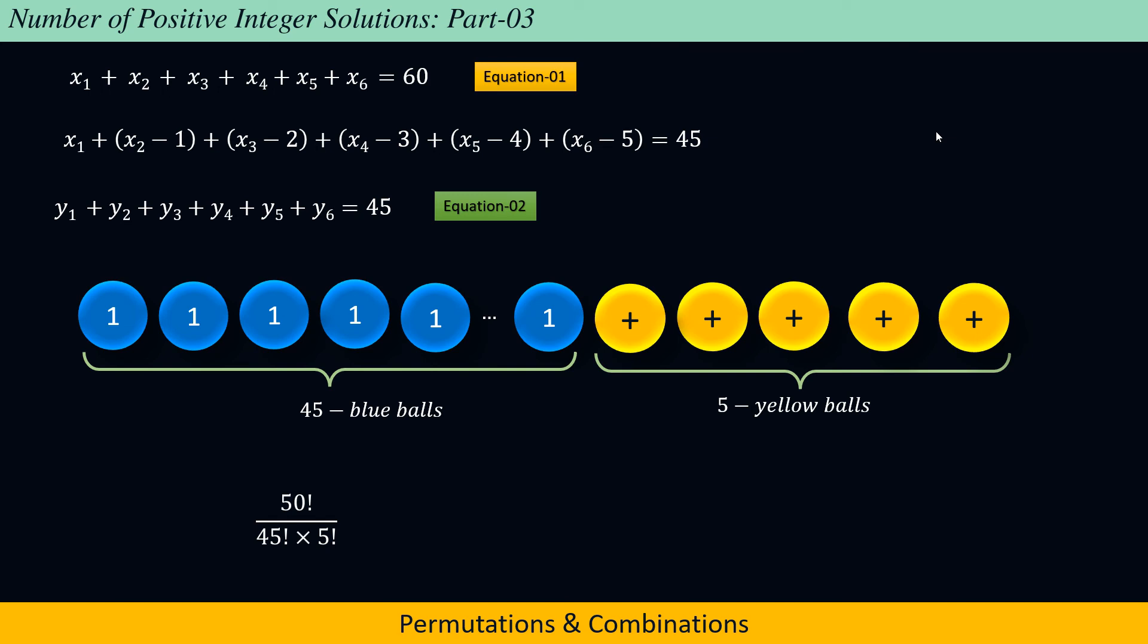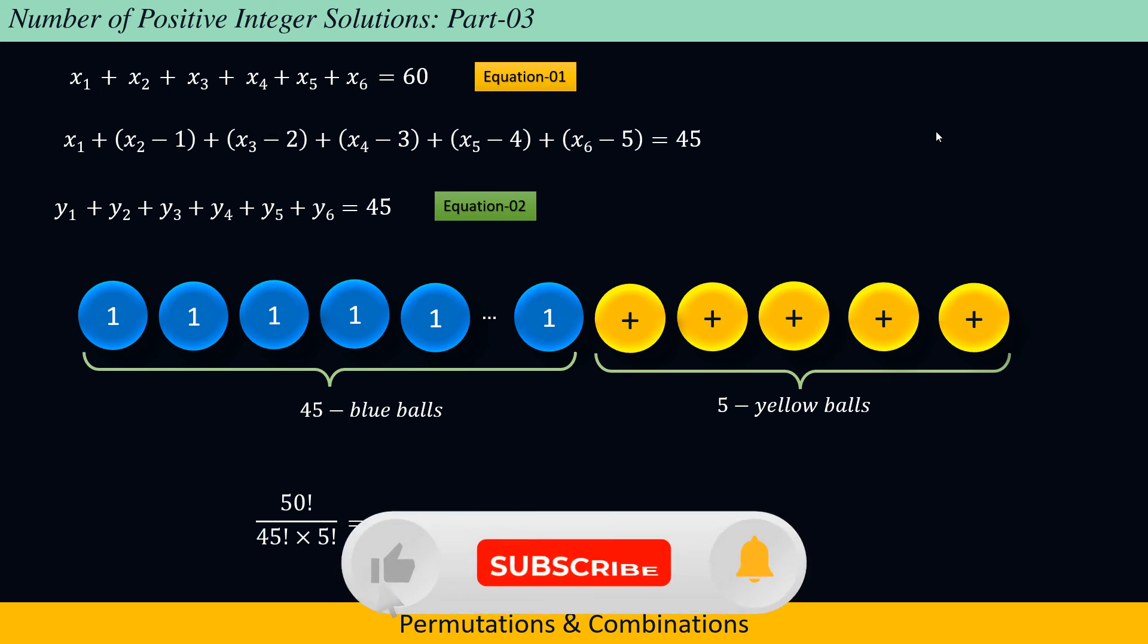In other words, 50 choose 5, or 50C5, which comes out to be 2,118,760. If you find the content of this video useful, consider subscribing to this channel.